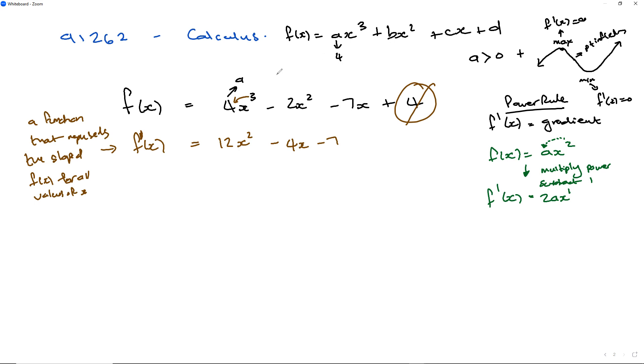So I put a small dash at the top, implying this is now the gradient function — a function that represents the gradient, or the slope of f of x, for all values of x. We've got f'(x) equals 12x squared minus 4x minus 7.